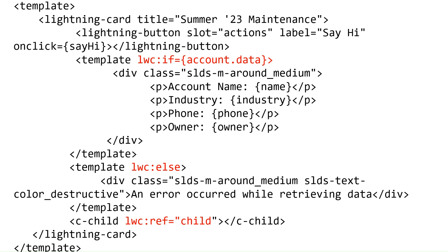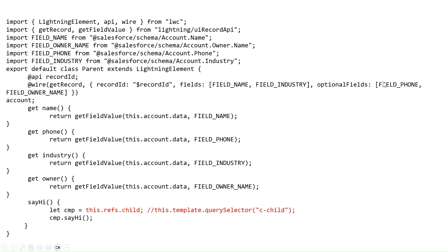I've changed the color of the areas I updated in parent.html — you can see them here. I also added a reference to the child using the new LWC tag. This is the parent.html file, and this is the parent JavaScript file. In parent.js, all I did was comment out the template querySelector and add this.refs.child. That takes care of it.